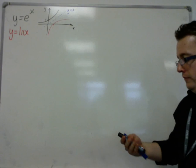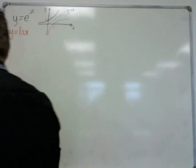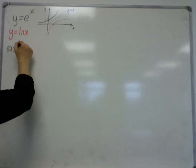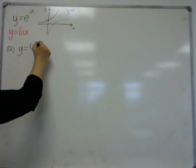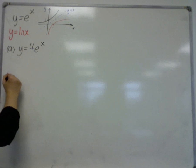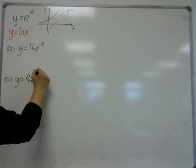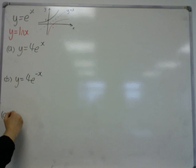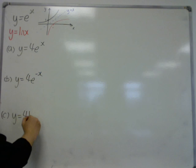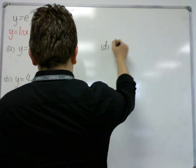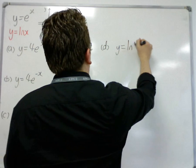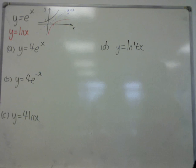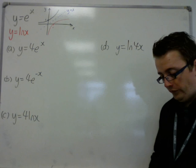So, they are the original functions and the original graphs, but what we're going to do is we're going to look at four separate examples. We're going to look at y is equal to 4e to the x, we're going to look at y is equal to 4e to the minus x, we're going to look at y is equal to 4 log x, and we'll look at y is equal to log of 4x. These are the four that we're going to look at, that I've gone through in class.